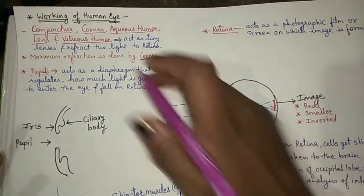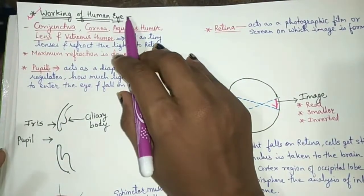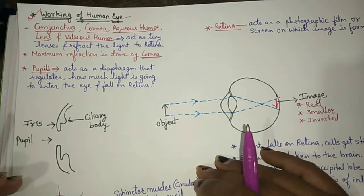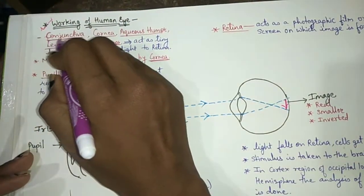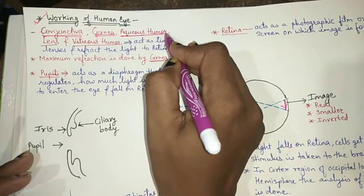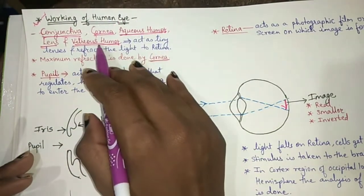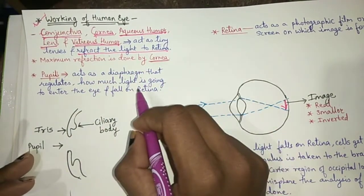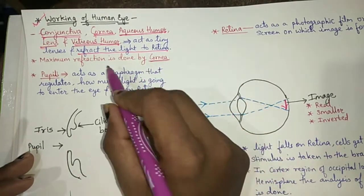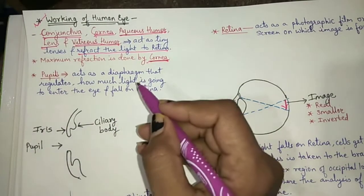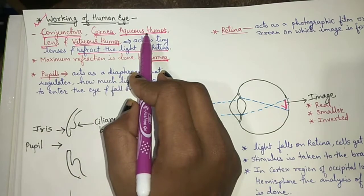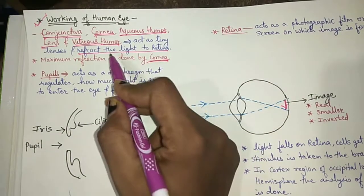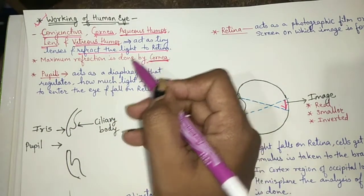Next, we discuss the working of the human eye — how image formation takes place. The conjunctiva, cornea, aqueous humor, lens, and vitreous humor all act as tiny lenses and refract light onto the retina. The maximum refraction of light is done by the cornea.